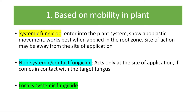Based on mobility in plant, we can classify the fungicides into two major groups. The first is systemic fungicides. They are called systemic because they enter into the plant system. They show apoplastic movement and work best when applied in the root zone, because they can be taken up by the root and translocated in the xylem vessel of the plant. The site of action of these systemic fungicides may be away from the site of application.